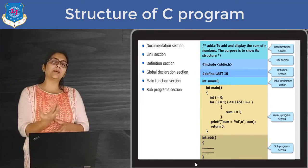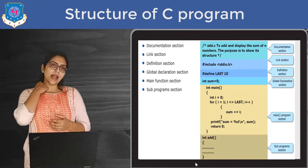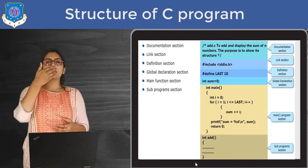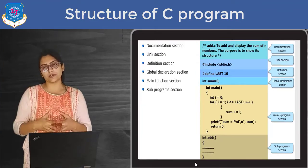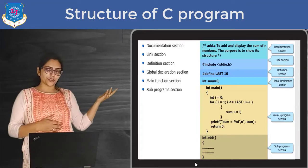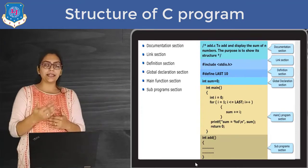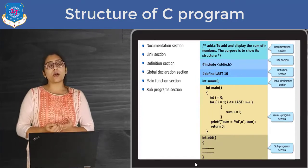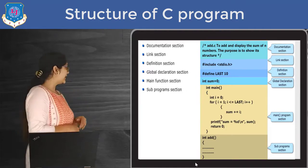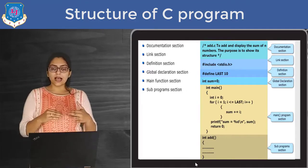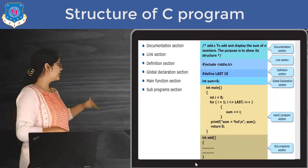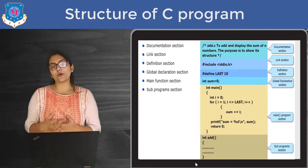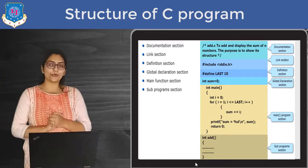Inside main there are basically two sections: the declaration part and the execution part. Suppose I declared int i = 0 - all that part is called declaration because I am declaring each of the variables I am going to use in my program. Wherever I am writing printf, scanf, or some kind of equations, that is called the execution part. Main is basically divided into two parts. Last but not least, we can use a list of functions - here I have used a function called 'add'. Functions will be covered in separate lectures.